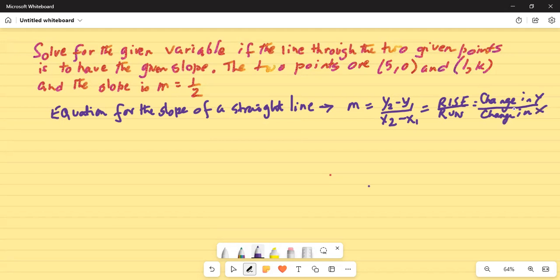Now, between the two points we can select any one of them as the first point and the other one as the second point. Let (5, 0) represent the first point.